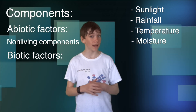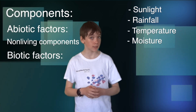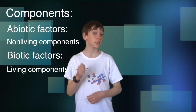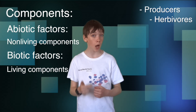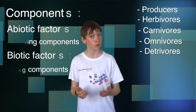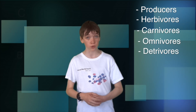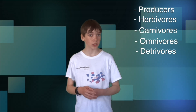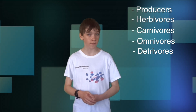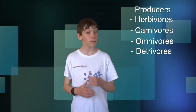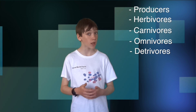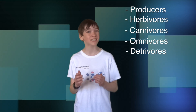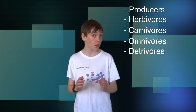The biotic factors of an ecosystem on the other hand are the living features such as the producers, herbivores, carnivores, omnivores and detrivores. These living features are also the main components of a food chain, the producers being the plants at the bottom which are then eaten by the herbivores which are then eaten by the carnivores.